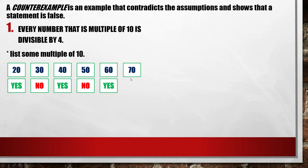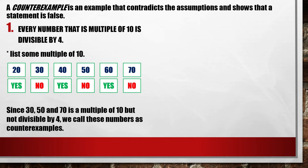50 divided by 4 gives a decimal, so the answer is no. Since 30, 50, and 70 are multiples of 10 but not divisible by 4, we call these numbers counter-examples.